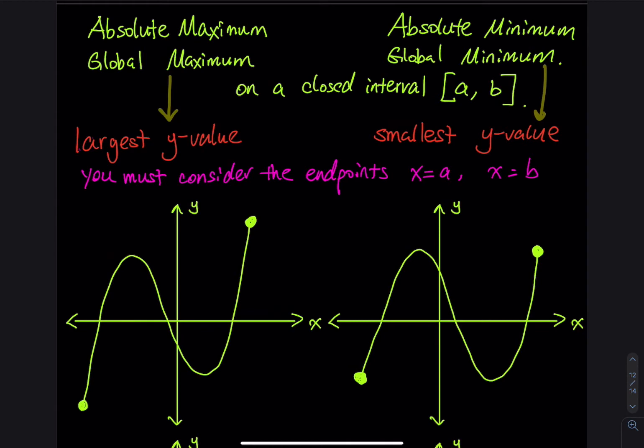Absolute maximum means you look at a graph and you are looking for the largest y value. Absolute minimum means you look at a graph and you are looking for the smallest y value. You also have to consider the endpoints a and b, because sometimes a or b can be the largest y or the smallest y.